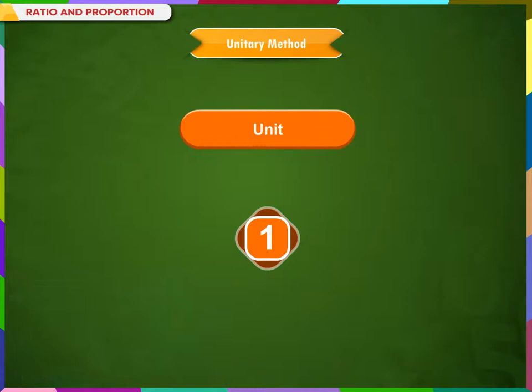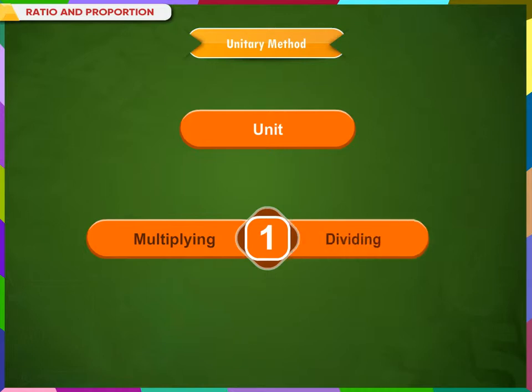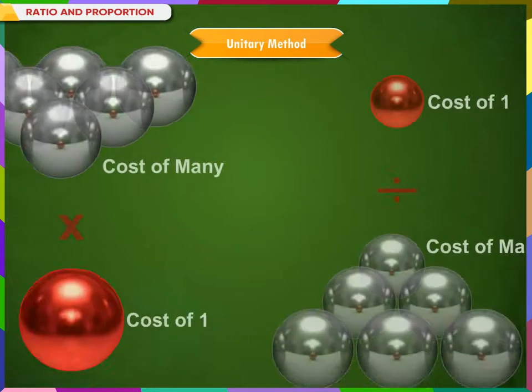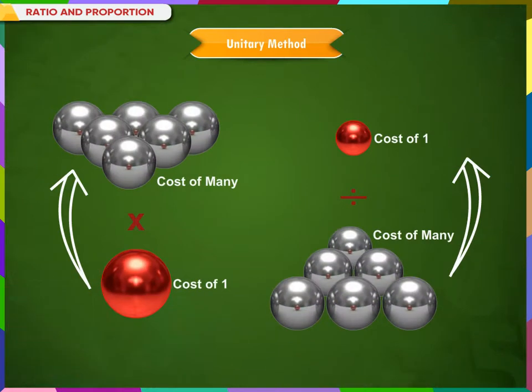If we know one, then we can find for many by multiplying. If we know more, then we can find for one by dividing. Observe the picture on the screen: cost of one multiplied gives cost of many.